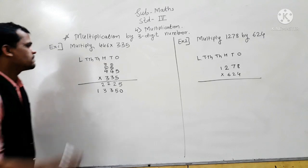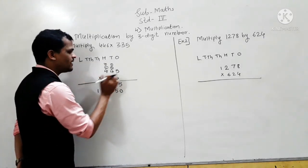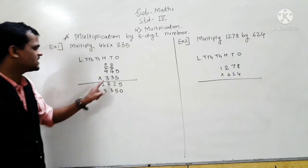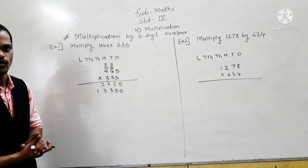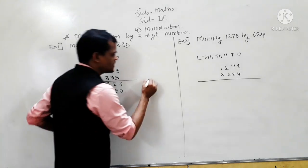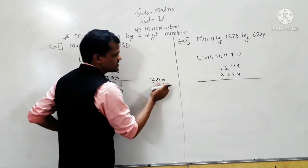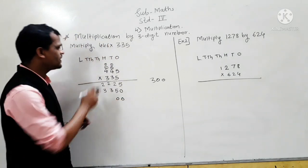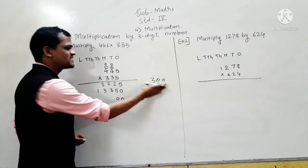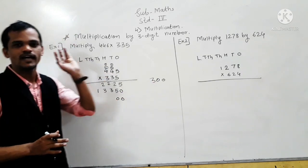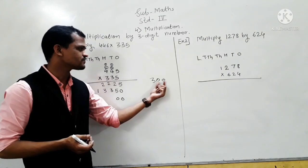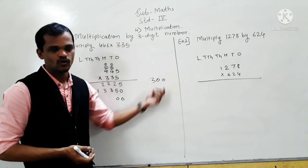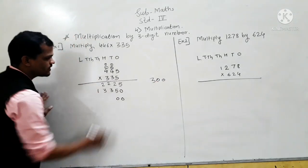Next, third step: multiply 425 by the hundreds place digit. Here the hundreds place digit is 3, which represents 300. You can observe here — we write it this way. You have to write 2 zeros here. If you multiply 445 by 300, the ones and tens digits of the product will be 0 because one of the numbers contains 2 zeros at the ones and tens place. So we write 2 zeros here.